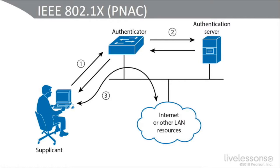In the middle we have the authenticator — usually a wired or wireless layer two or layer two and layer three device — which initially accepts what we call EAPOL frames. When a person plugs their laptop into a port in an empty cubicle, the supplicant will send an EAPOL — Extensible Authentication Protocol over LAN — start frame to the switch.